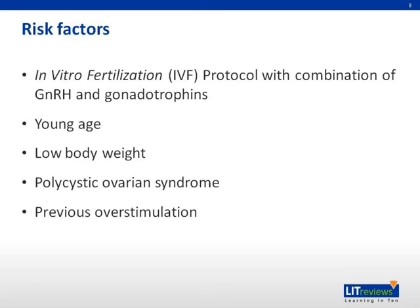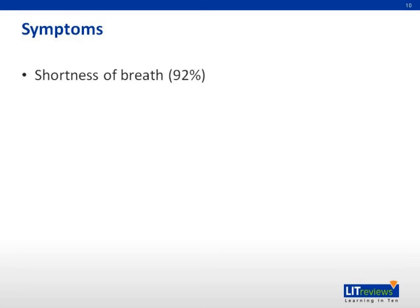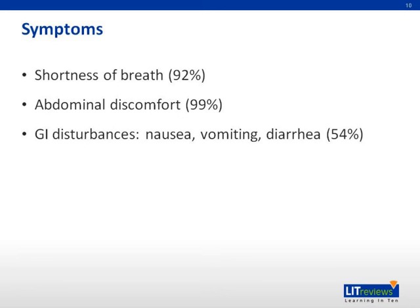In addition, an increased number of small and medium-sized follicles and elevated estradiol levels around the assumed time of ovulation increase the incidence. OHSS should be suspected when recent treatment of stimulation to ovulate has been initiated, and most likely 3 to 7 days after administration of beta-HCG. 92% of patients present with shortness of breath, 99% with abdominal discomfort, 54% with gastrointestinal disturbances such as nausea, vomiting, and diarrhea, 30% with oliguria, and 13% have peripheral edema.